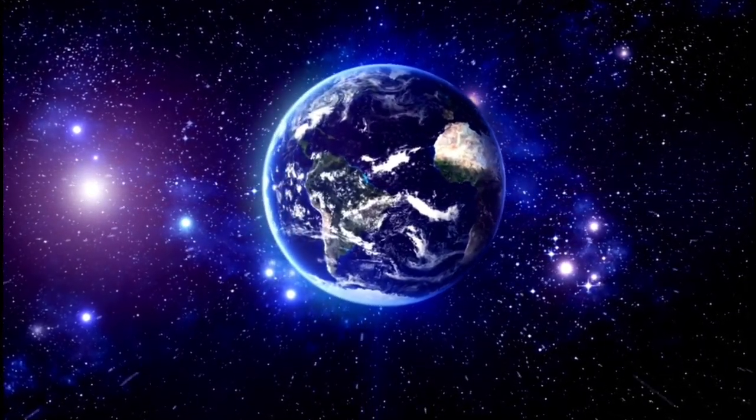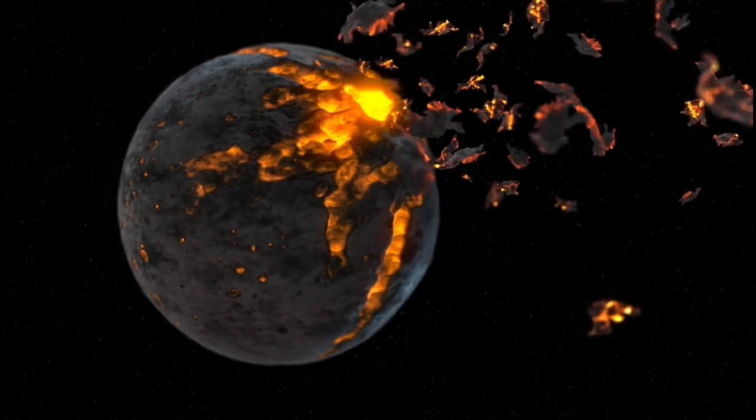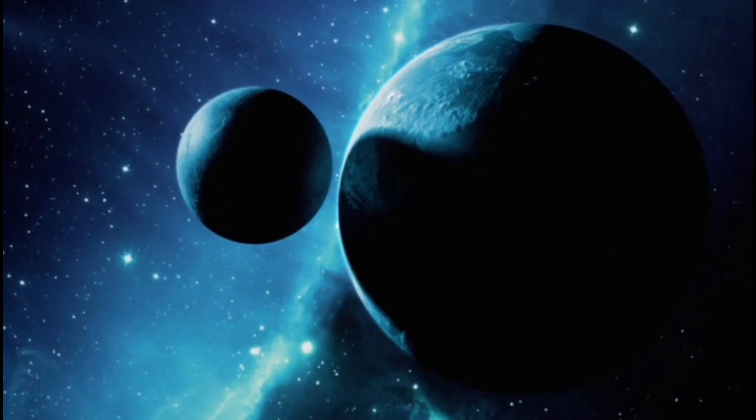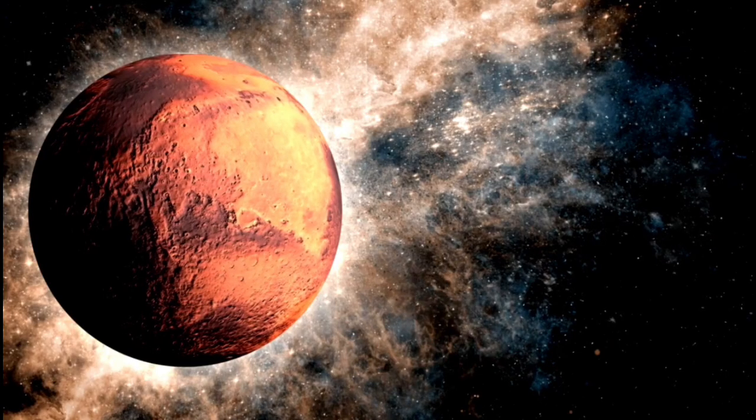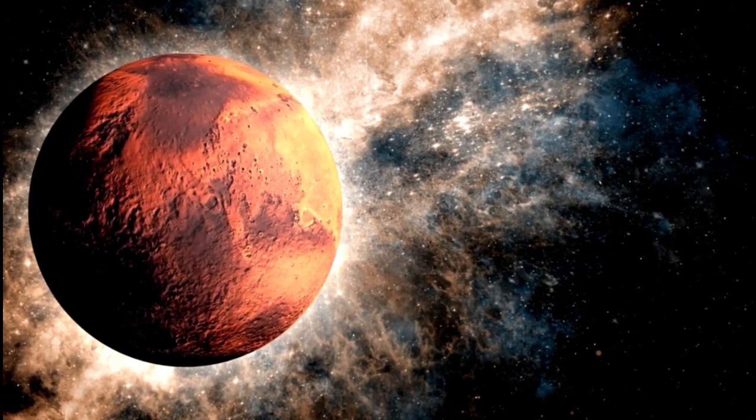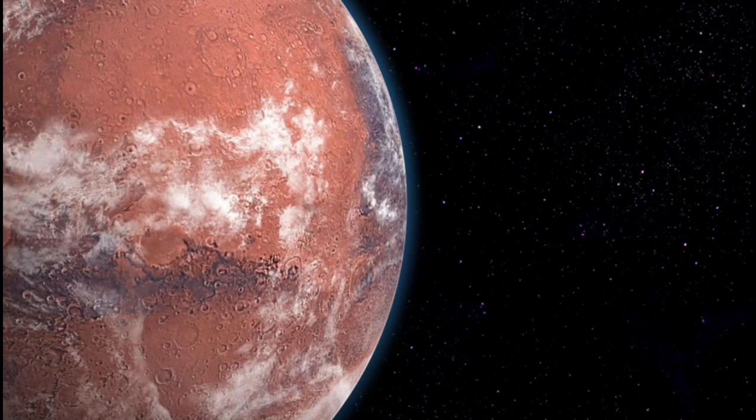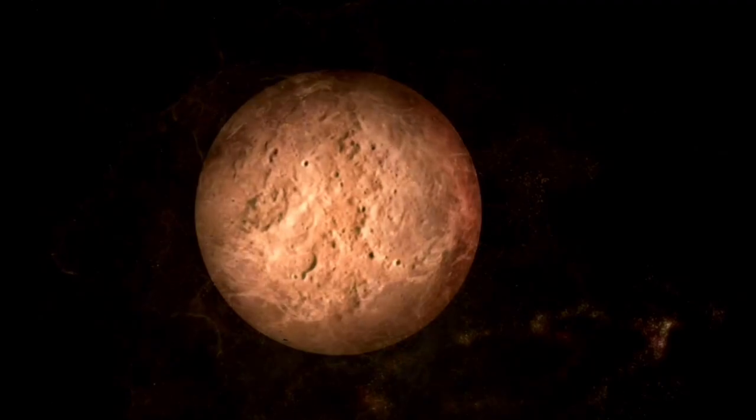If such a disturbance occurred, the result could be a cascading effect, altering not just Pluto's orbit, but those of many Kuiper belt objects. This so-called gravitational domino effect could reshape the outer edges of the solar system. The idea, though speculative, illustrates just how delicately balanced our solar system truly is, and how vital it is to continue our surveillance of its farthest reaches.